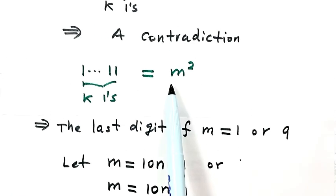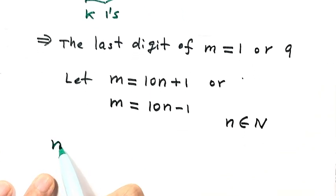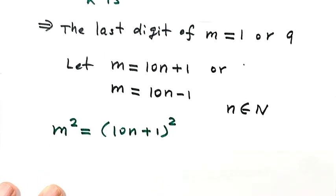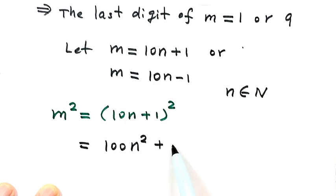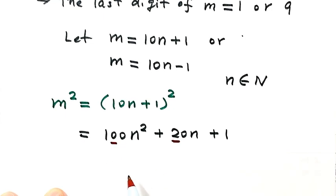Now let's look at m squared for the first case. m squared equals (10n + 1) squared. Expanding the square gives 100n squared plus 20n plus 1. The 10th digit here is even, so for this number the 10th digit of m squared is even.